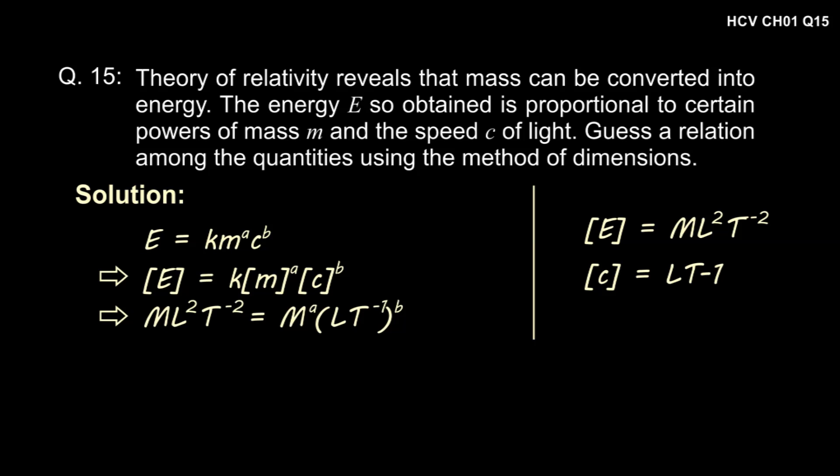Putting these values we get M L square T to the power minus 2 is equal to M to the power A into L into T to the power minus 1 whole to the power B. Simplifying, we get M L square T to the power minus 2 is equal to M to the power A L to the power B into T to the power minus B.